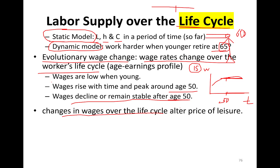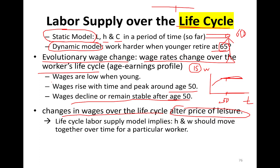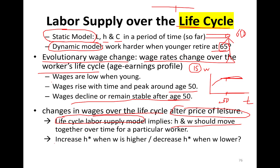Changes in wages over the life cycle will alter the price of leisure. When wages are low, leisure is cheaper, so I'm going to take more leisure. When wages are high, I'm going to work more. According to the life cycle labor supply model, hours and wages should move together over time — they're positively related over time for a particular worker. And leisure and wages should move in the opposite direction. Our optimal hours worked will increase when wages are higher, and decrease when wages are lower.